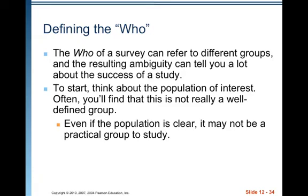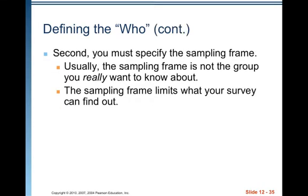Defining the who. The who of a survey can refer to different groups, and the resulting ambiguity can tell you a lot about the success of a study. First, think about the population of interest — often this is not a well-defined group. Even if the population is clear, it may not be a practical group to study. Second, you must specify the sampling frame. Usually the sampling frame is not the group you really want to know about.